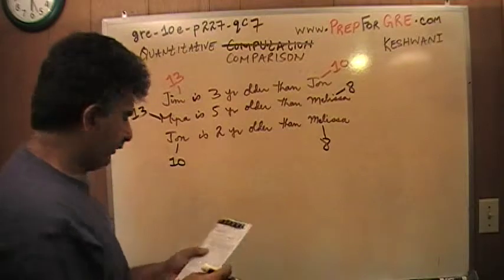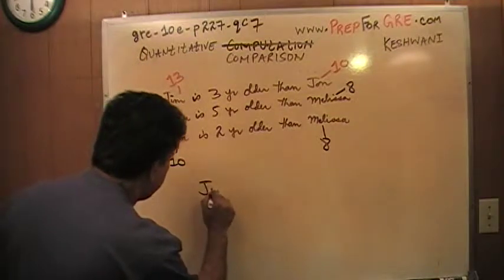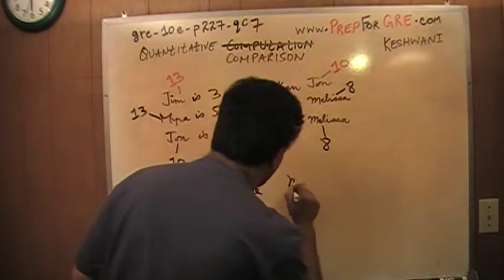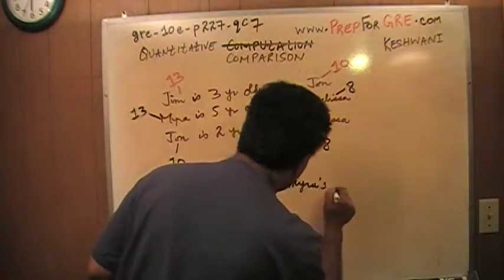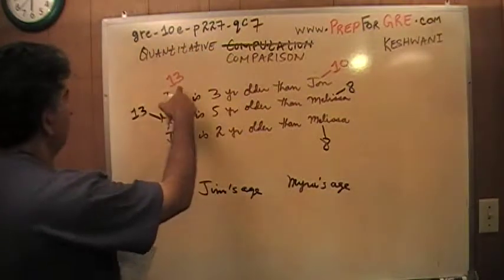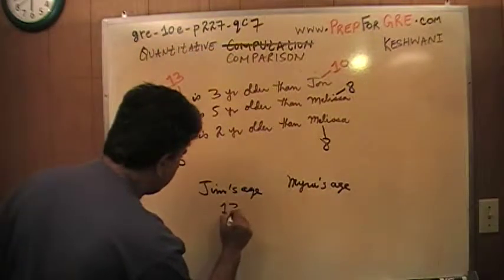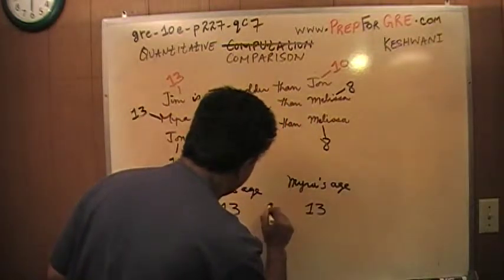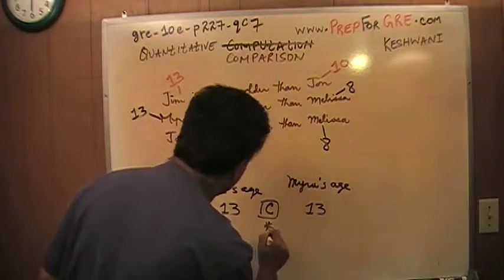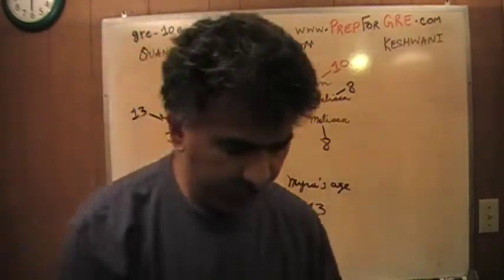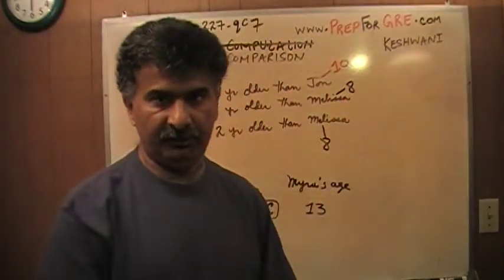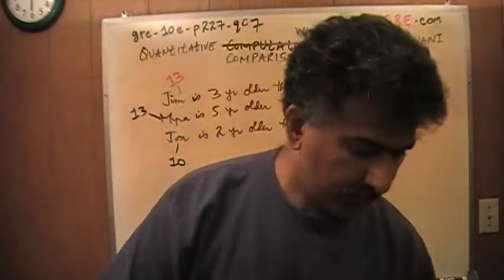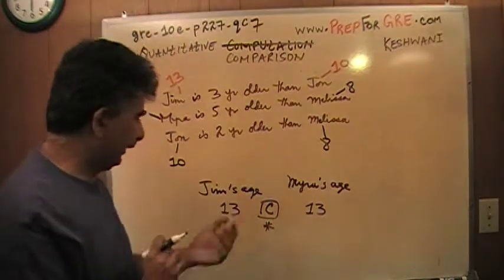There you go. That's all. Now we are ready to look at the problem. What is it that they're asking? Jim's age versus Myra's age. Let's see. Jim's. Well, there you go. Jim is thirteen, and it turns out that so is Myra. Answer is C.